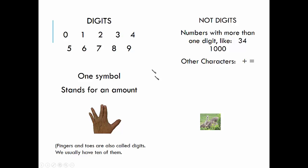Here's a summary. Here are the digits. It means one symbol and it stands for an amount. Fingers and toes are also called digits. We usually have ten of them.